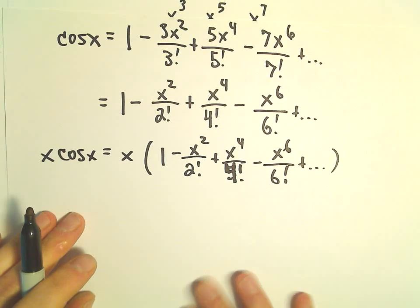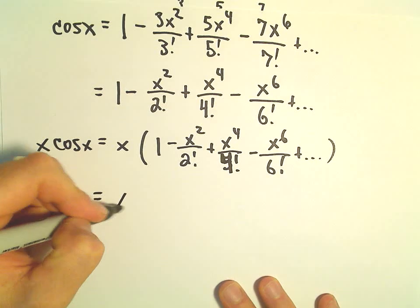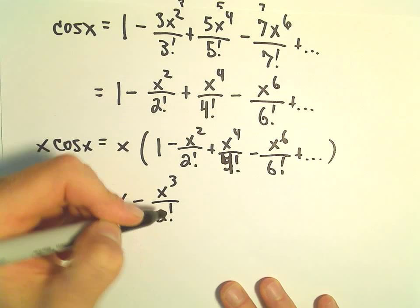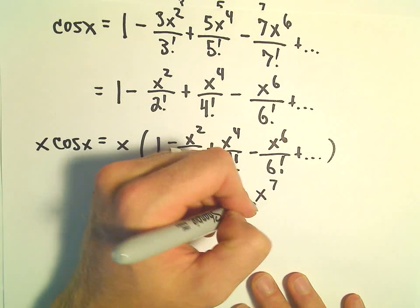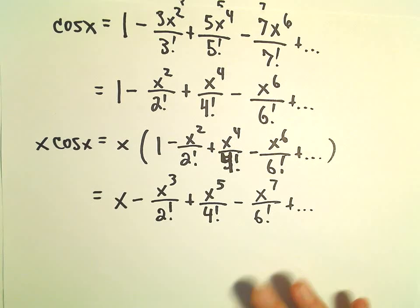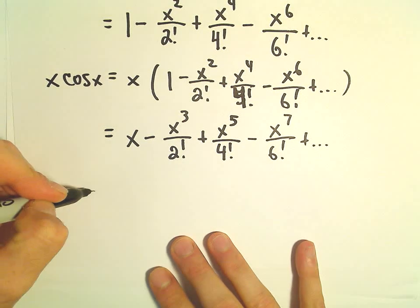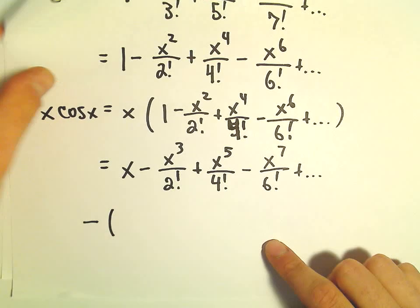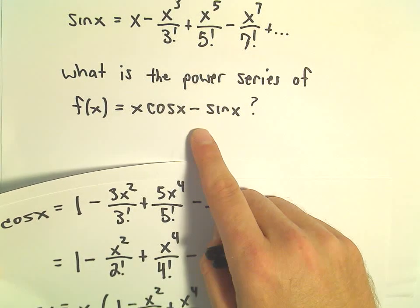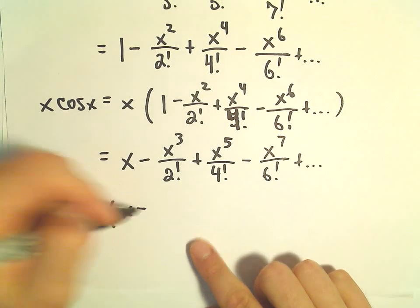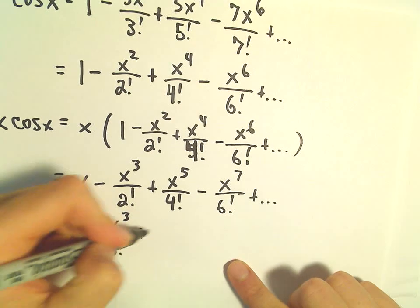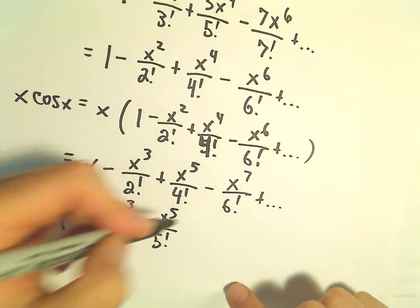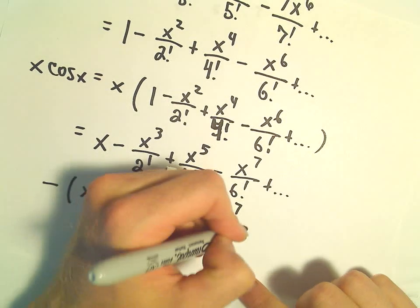When we distribute, we'll be left with x minus x to the third over two factorial plus x to the fifth over four factorial minus x to the seventh over six factorial. Now we can compute x cosine x, and then we subtract away our series expansion for sine x, which is x minus x to the third over three factorial plus x to the fifth over five factorial minus x to the seventh over seven factorial, and so on.